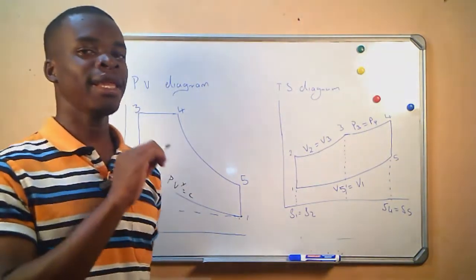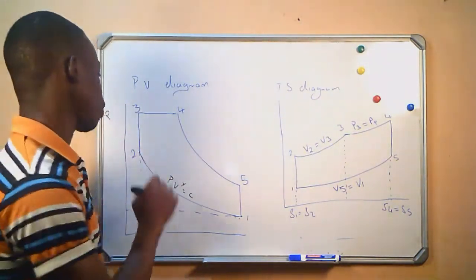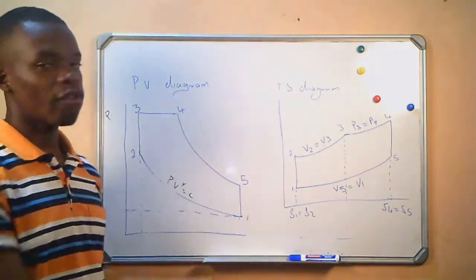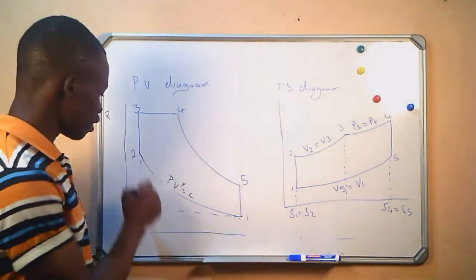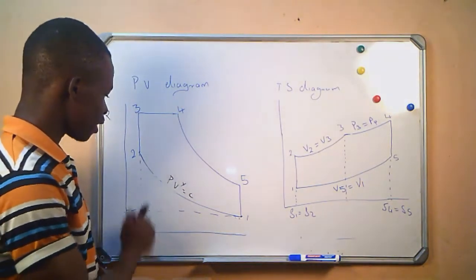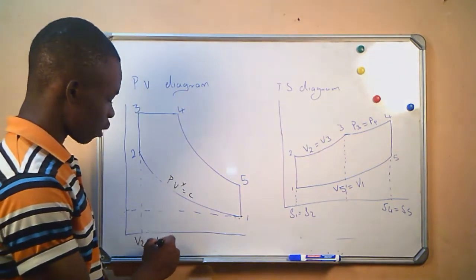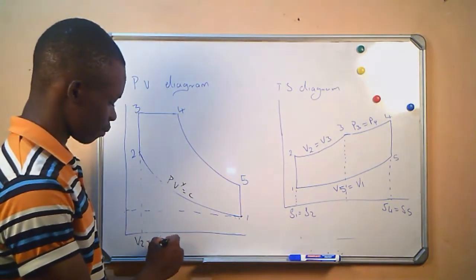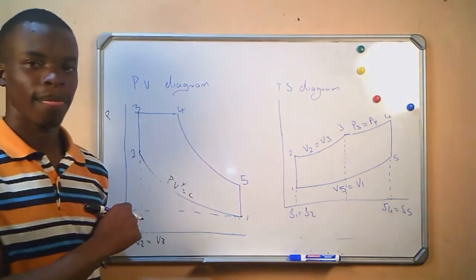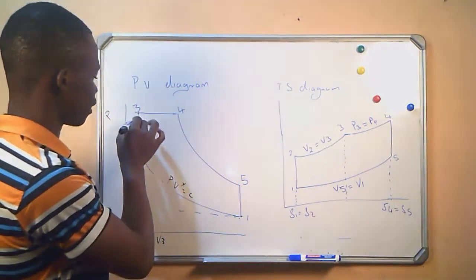Now, in Joule cycle, we are going to have two stages of combustion. First, we will have combustion taking place at constant volume where V2 is equal to V3. P3 is equal to P4, and from here to here, heat is added into the system.